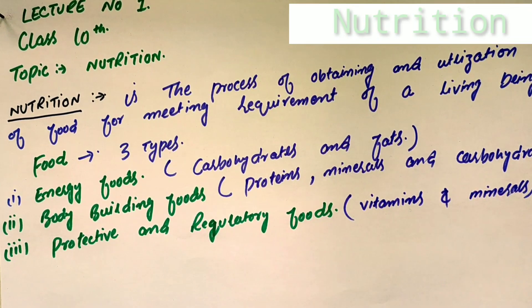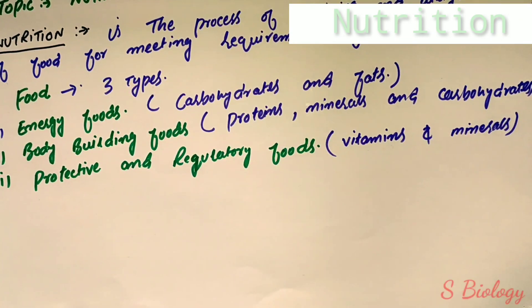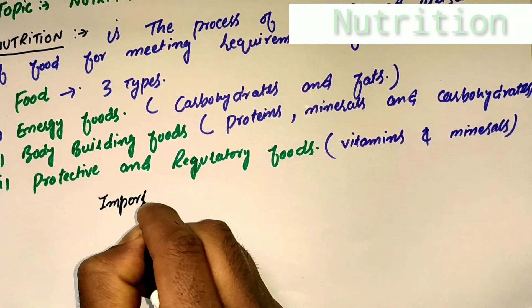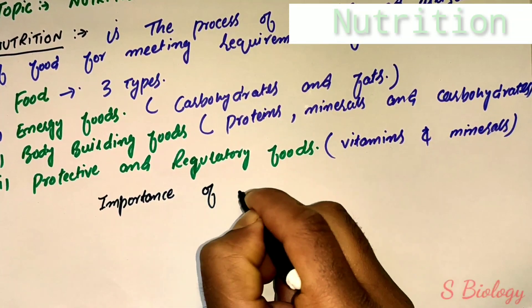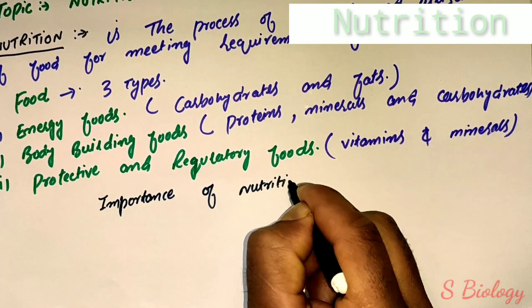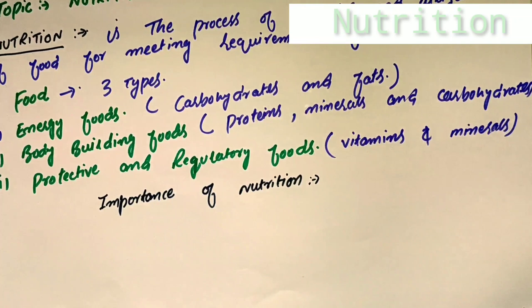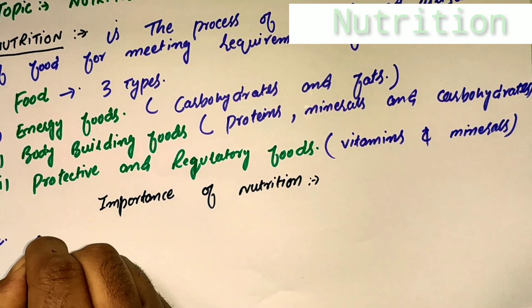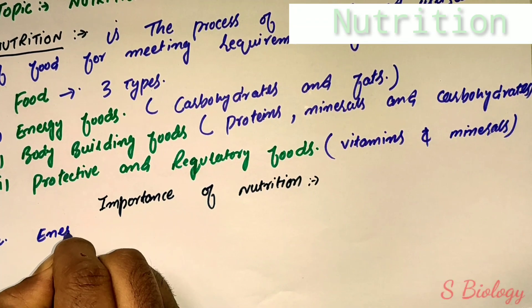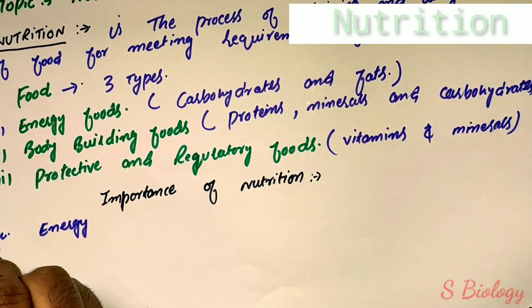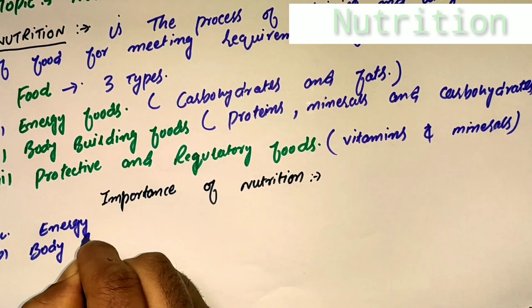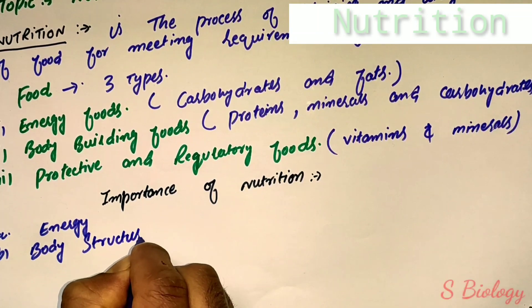The importance of nutrition: first, food provides energy, which is required by the body all the time whether asleep, taking rest, or doing work. Second, body structure: all body components are built from food. Third, growth: food is used in building protoplasm. More protoplasm is required for formation and enlargement of cells that take part in growth of the organism.